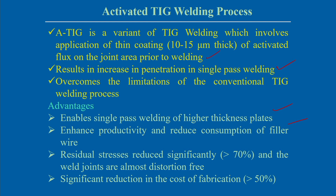The A-TIG welding process overcomes the limitation of conventional TIG welding, where very high depth of penetration cannot be achieved. Advantages include: single-pass welding with very high penetration, no need for multi-pass welding, enhanced productivity, reduced filler wire consumption, reduced residual stress, nearly distortion-free weld joints, and significant reduction in fabrication cost.